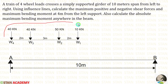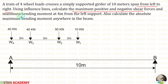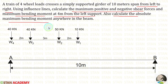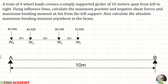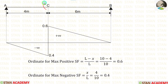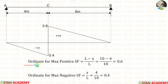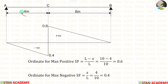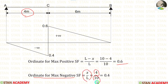In this question, 4 wheel loads are given and these loads are moving from left to right. We have to make influence lines, then calculate the maximum positive and negative shear force and maximum bending moment at 4 meter from the left support. First, let us calculate the maximum positive and negative shear forces. Let us mark point C at 4 meter from the left side. The formula for the ordinate for maximum positive shear force is (L minus x) by L. With L equal to 10 meter and x equal to 4 meter, we get 0.6. The ordinate for maximum negative shear force is x by L, giving us 0.4.